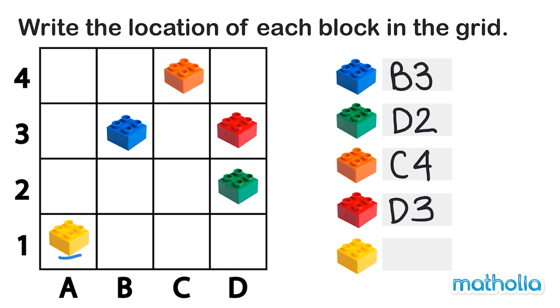Finally the yellow block. The yellow block is in column A and row 1. So the yellow block is in position A1.